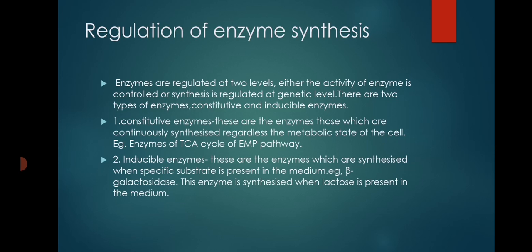There are two types of enzymes: constitutive enzymes and inducible enzymes. Constitutive enzymes are continuously synthesized in the cell regardless of the metabolic state of the cell. For example, the enzymes for the TCA cycle or enzymes required for the EMP pathway — these enzymes are continuously synthesized whatever the metabolic state may be.